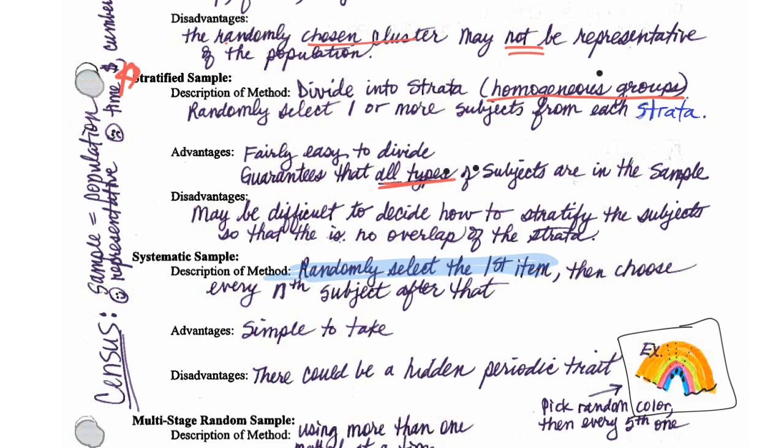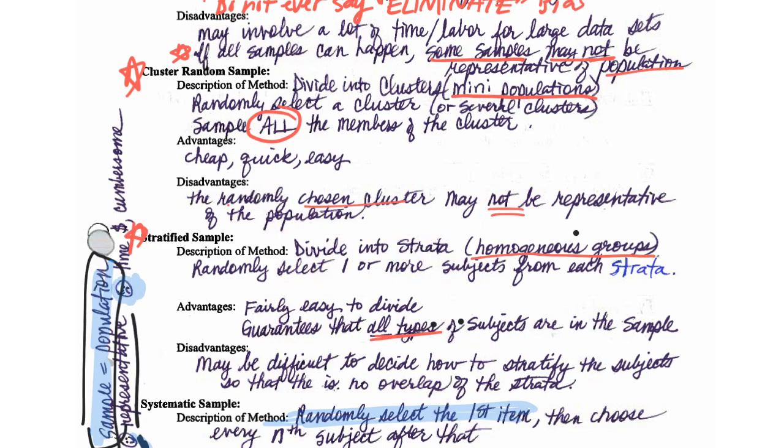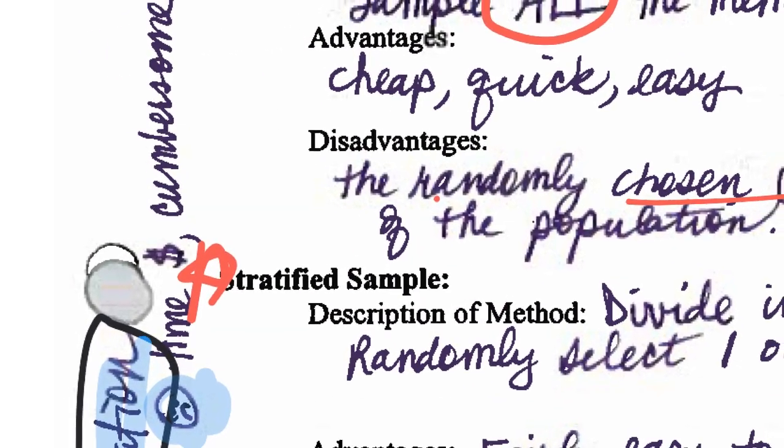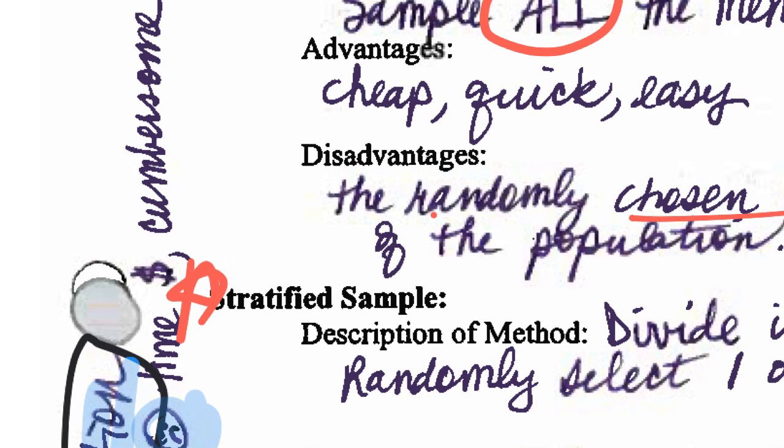And finally, it's on the side here. A census is another sampling method. So I have a little smiley face here on the side because it's representative. Why is a census representative? Because the sample actually is the population. If the sample is the population, then I would certainly hope that it's accurate. So now that's an advantage that it's representative. But what is it? And here's a sad face I draw here for disadvantage. The sad face for disadvantage is that it's very time-consuming for sure. Do you know the census in the United States takes almost a whole year to complete? Furthermore, it's very expensive.